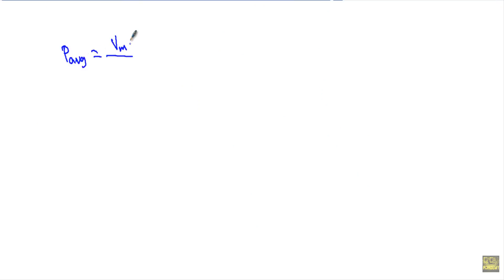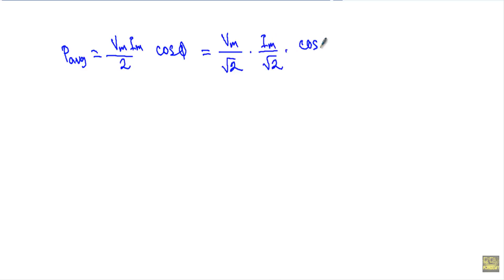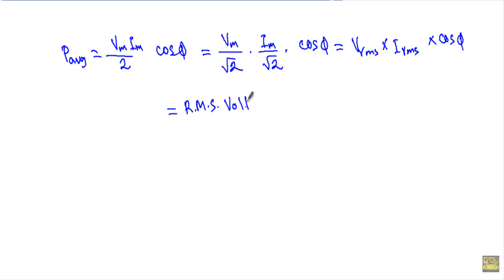The average power absorbed by the RC circuit is given by Vm·Im/2·cos(phi). Here Vm/√2 is the RMS value of voltage, Im/√2 is the RMS value of current, and cos(phi) is the power factor. So the average power equals Vrms times Irms times cos(phi) — that is, RMS voltage times RMS current times the power factor.